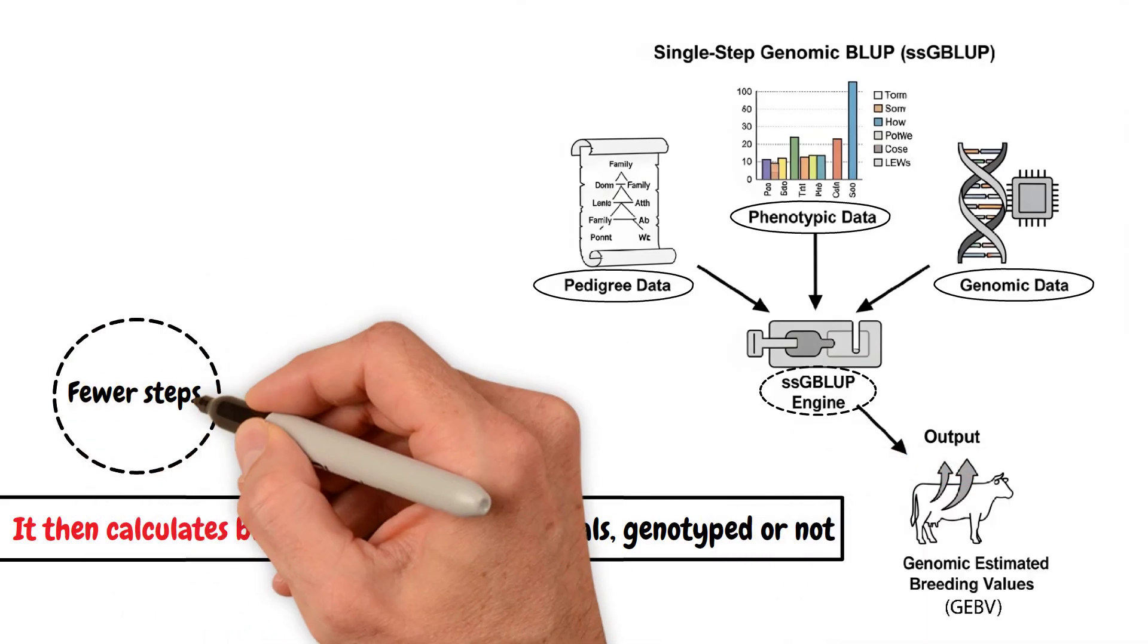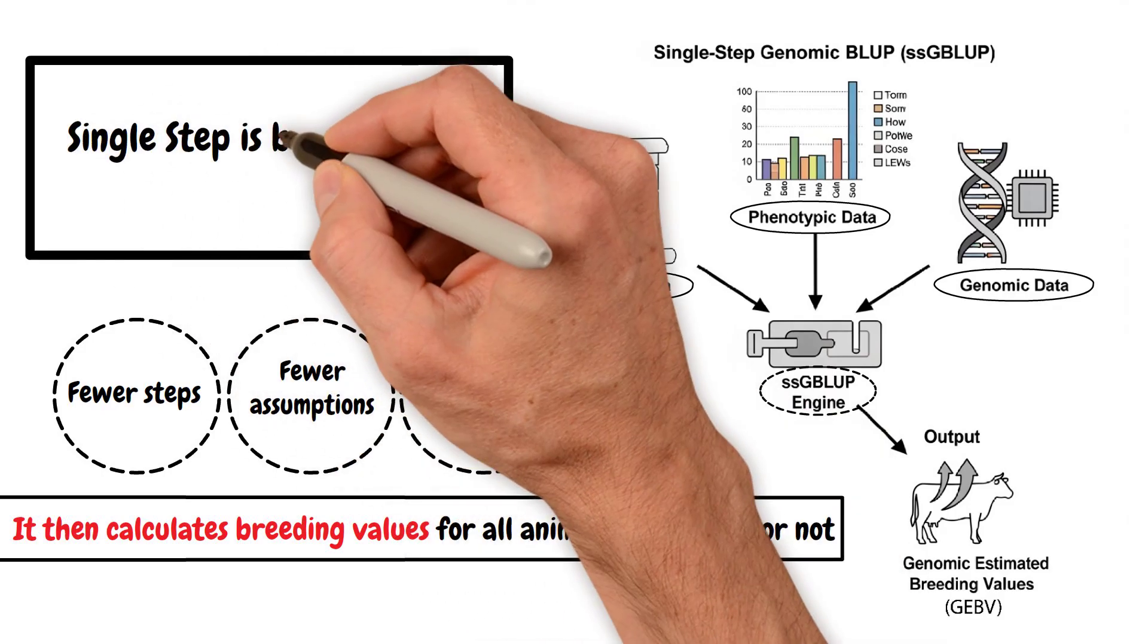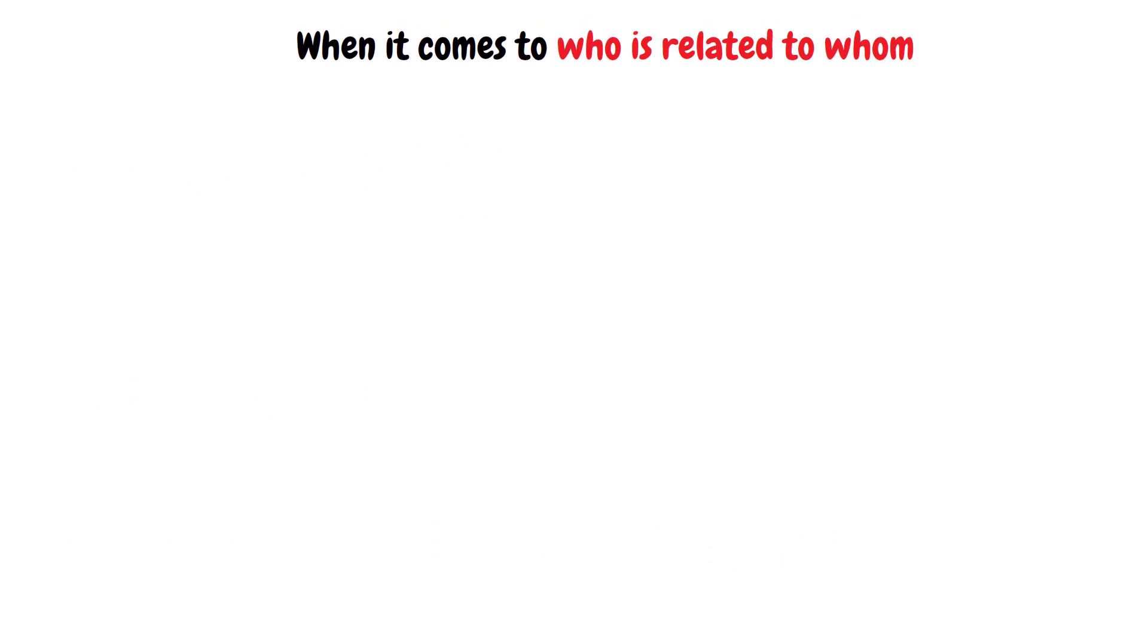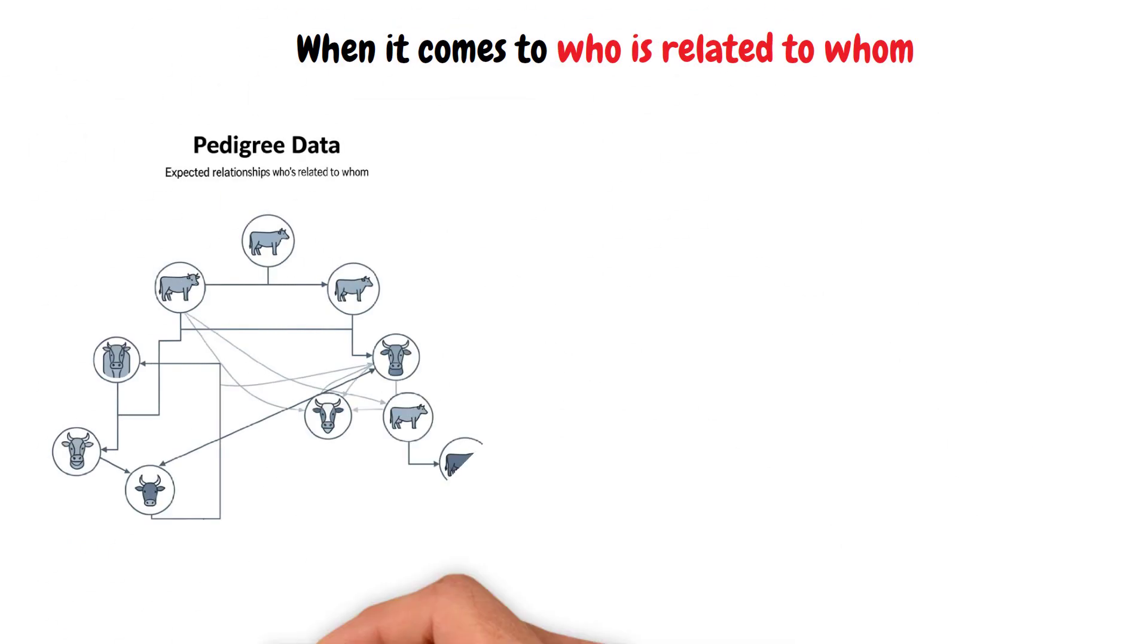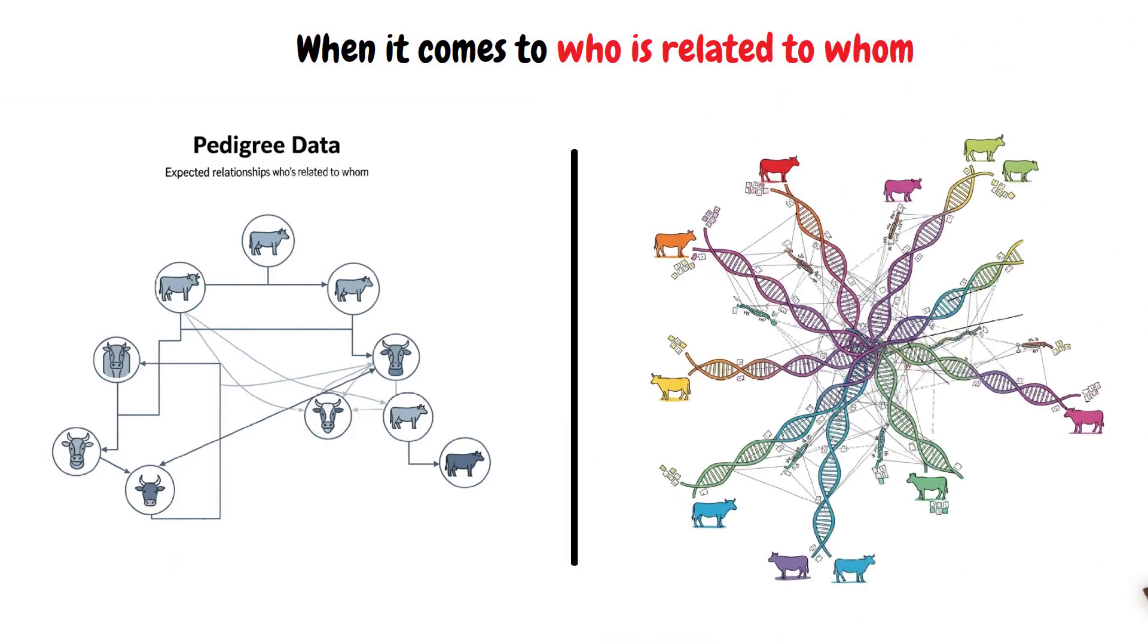This means fewer steps, fewer assumptions, and more accurate results. Single-step is based on the following important principle: When it comes to who is related to whom, pedigree data shows expected relationships, and genomic data shows actual relationships, based on DNA.